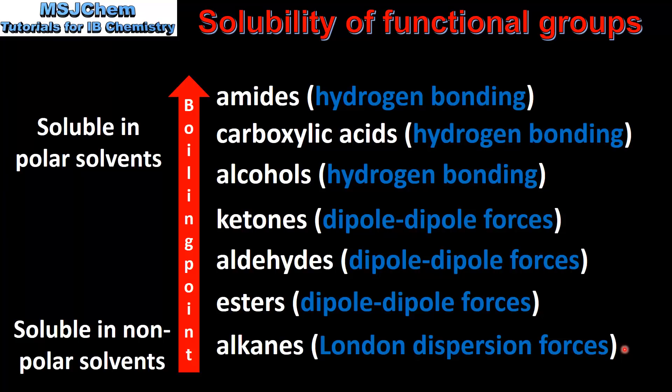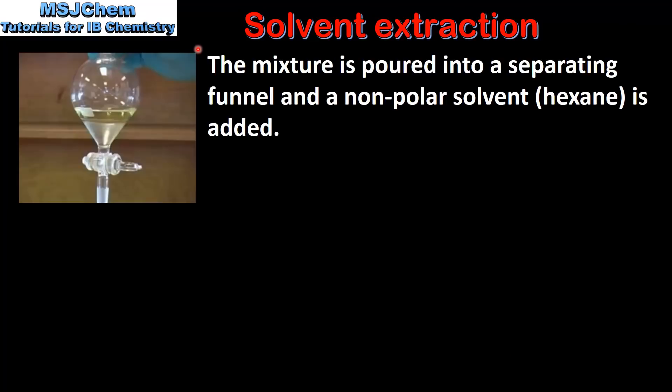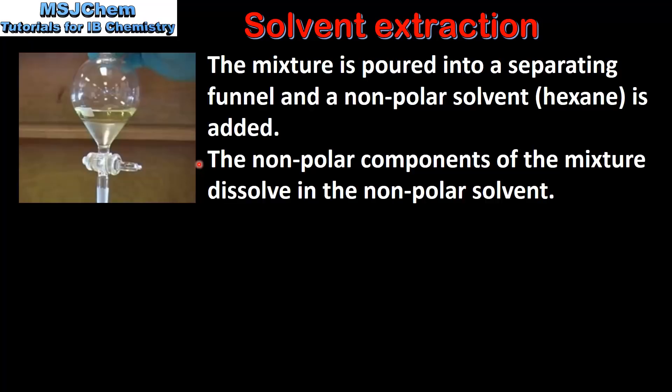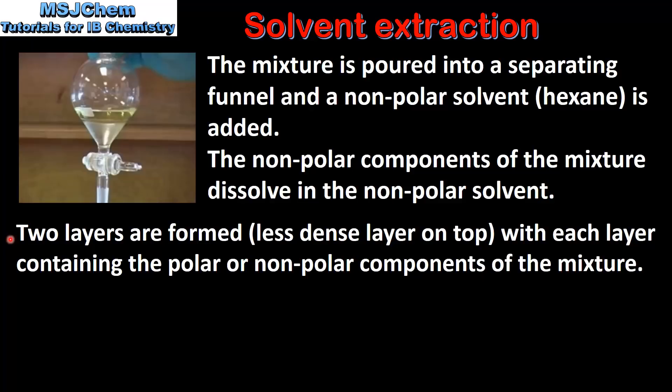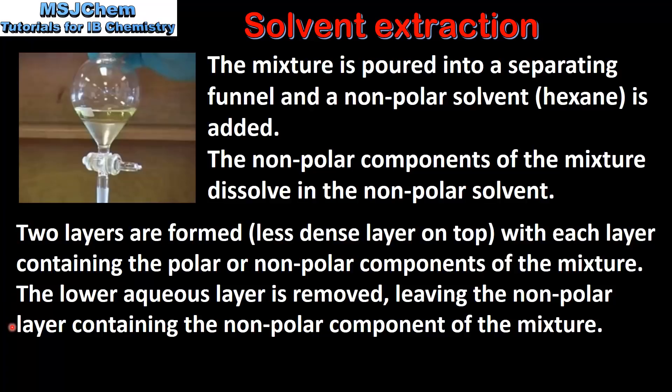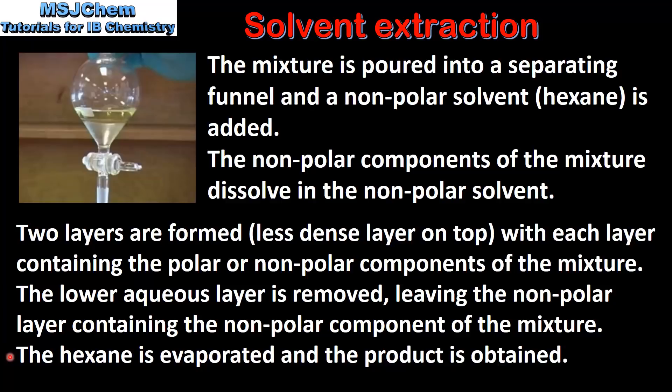Next we look at solvent extraction. In solvent extraction the mixture is poured into a separating funnel and a non-polar solvent such as hexane is added. The non-polar components of the mixture dissolve in the non-polar solvent. Two layers are formed with a less dense layer on top, each layer containing the polar or non-polar components of the mixture. The lower aqueous layer is removed, leaving the non-polar layer containing the non-polar component. In the final step, the hexane is evaporated and the product is obtained.